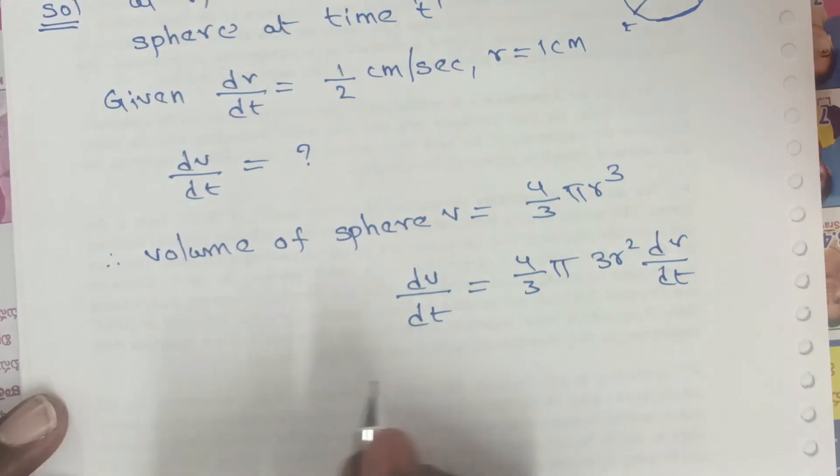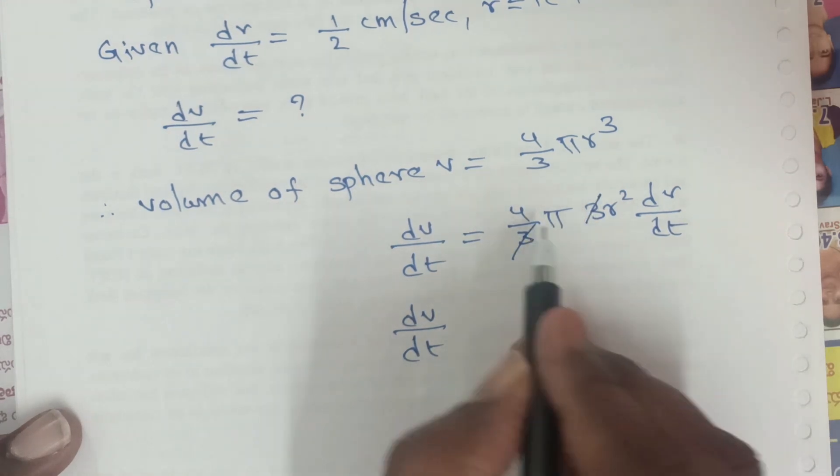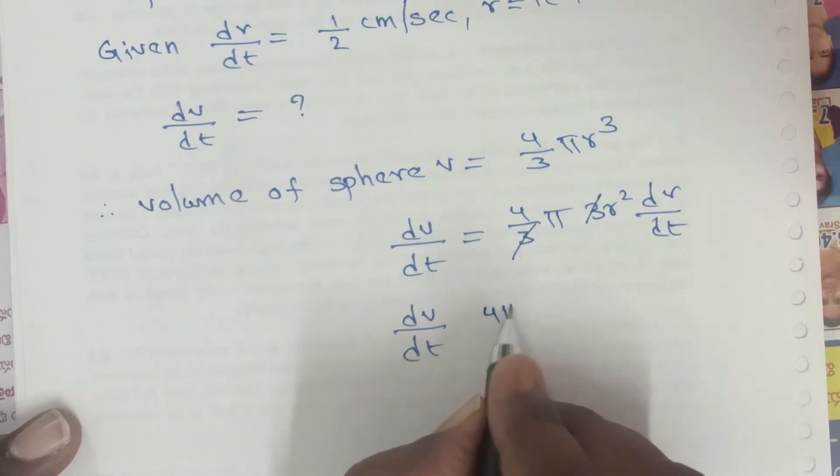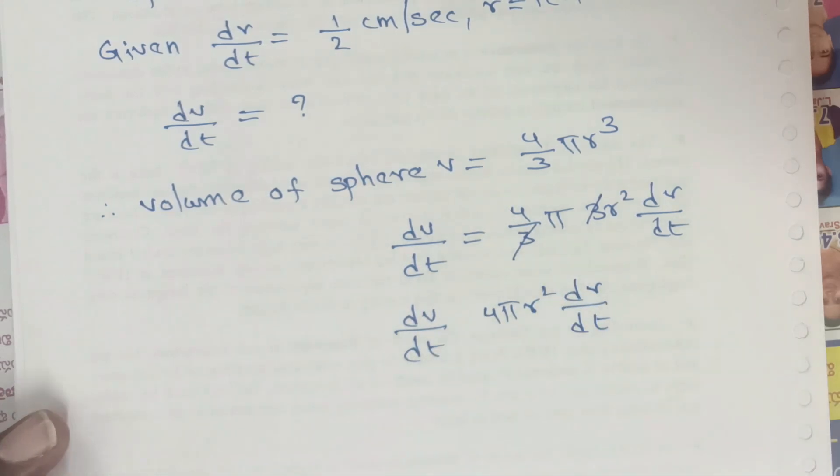Simplifying: the 3's cancel, giving dv/dt equals 4π r² times dr/dt. Now we substitute the values.